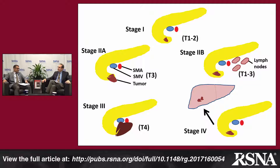Stage 3 is the interesting one, subdivided into locally advanced pancreatic cancer — where there is encasement of one or more major vessels with venous involvement that is not reconstructable — and borderline resectable disease, where the tumor abuts a major vessel, either an artery or a vein, and is reconstructable or resectable. That borderline resectable category is what we really focus on in this paper.